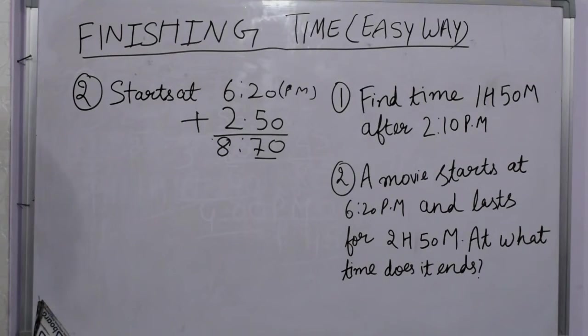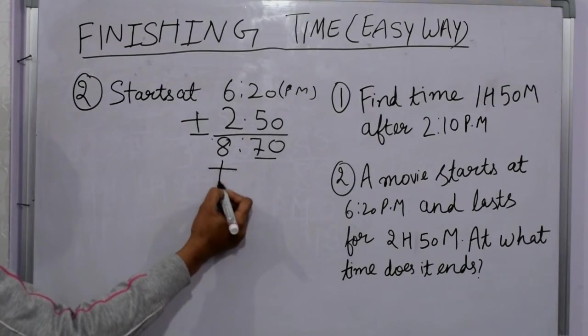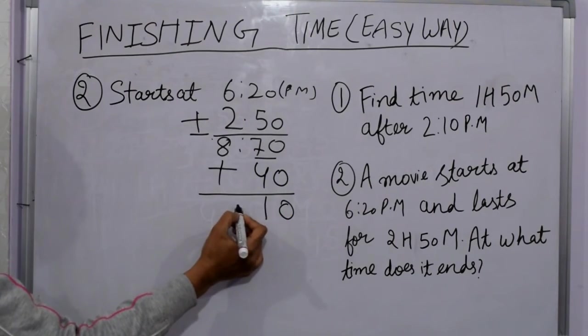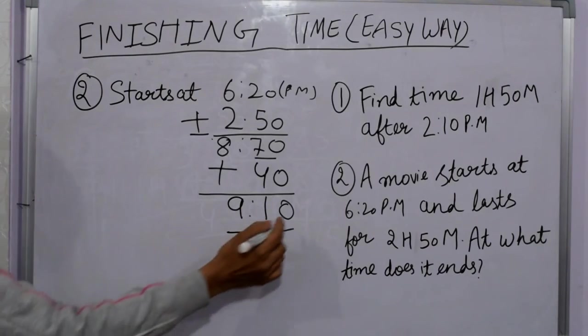We don't have 70 minutes on the clock. Now what to do? We are adding here, just simply convert it. We got 9:10 PM and this is our answer, 9:10 PM.